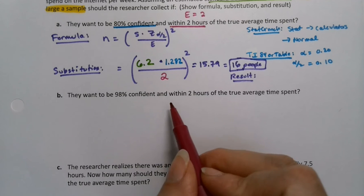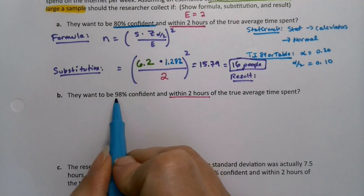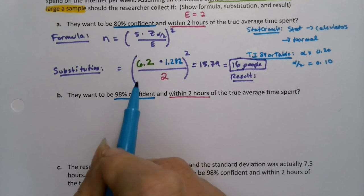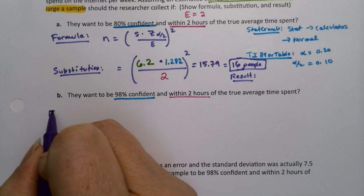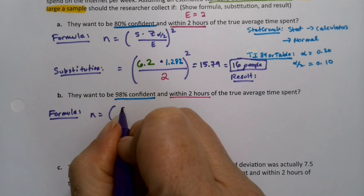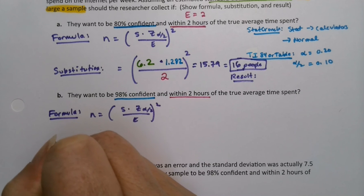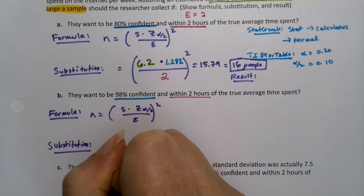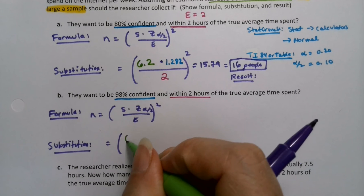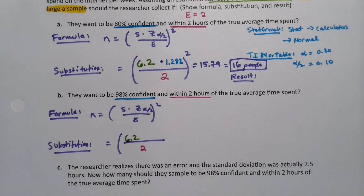Suppose we want to keep the margin of error to be within two, but I'm going to change my confidence level to 98 rather than 80. That's a jump. Let's see what happens. So formula: n is still S times Z alpha over two over the error squared. It's still 6.2 of my S. That has not changed. And two is still my error. That has not changed. But what has changed is my Z.